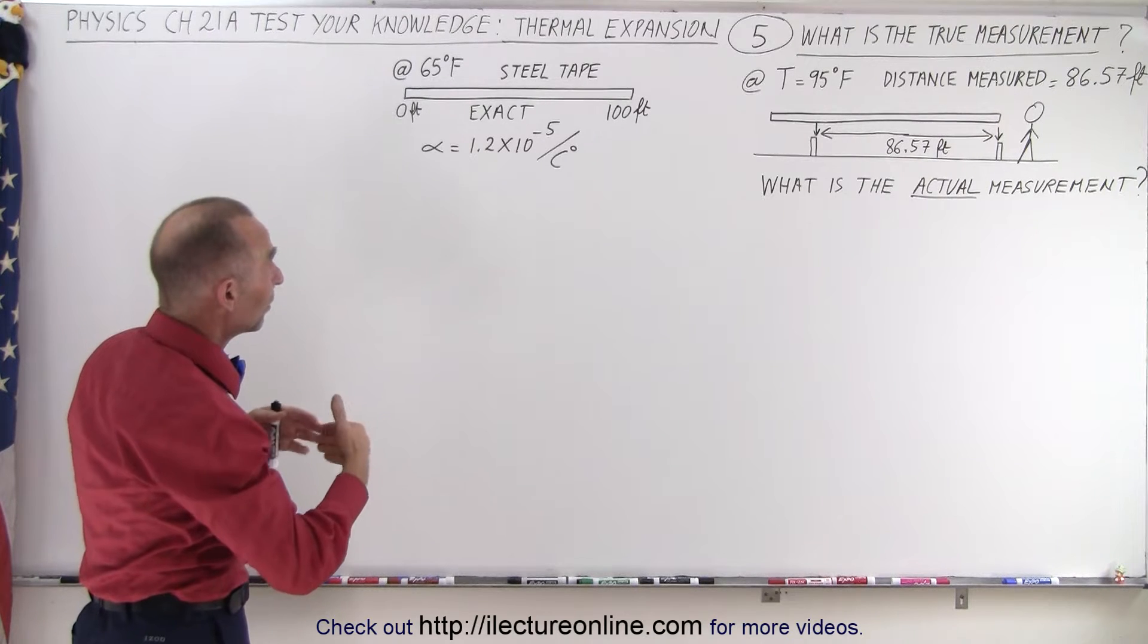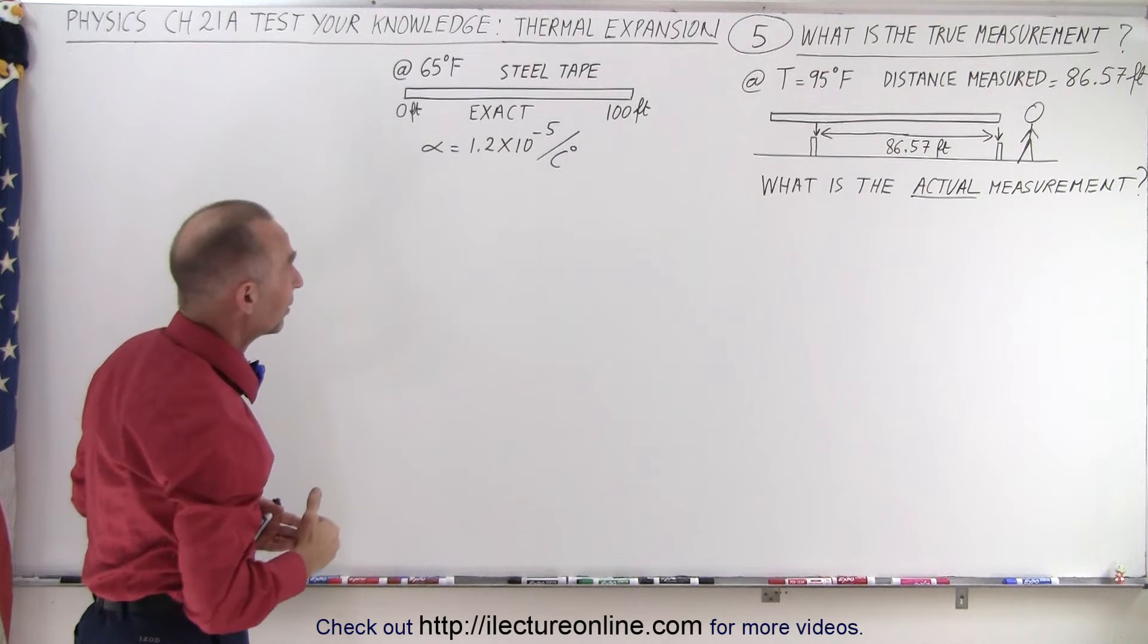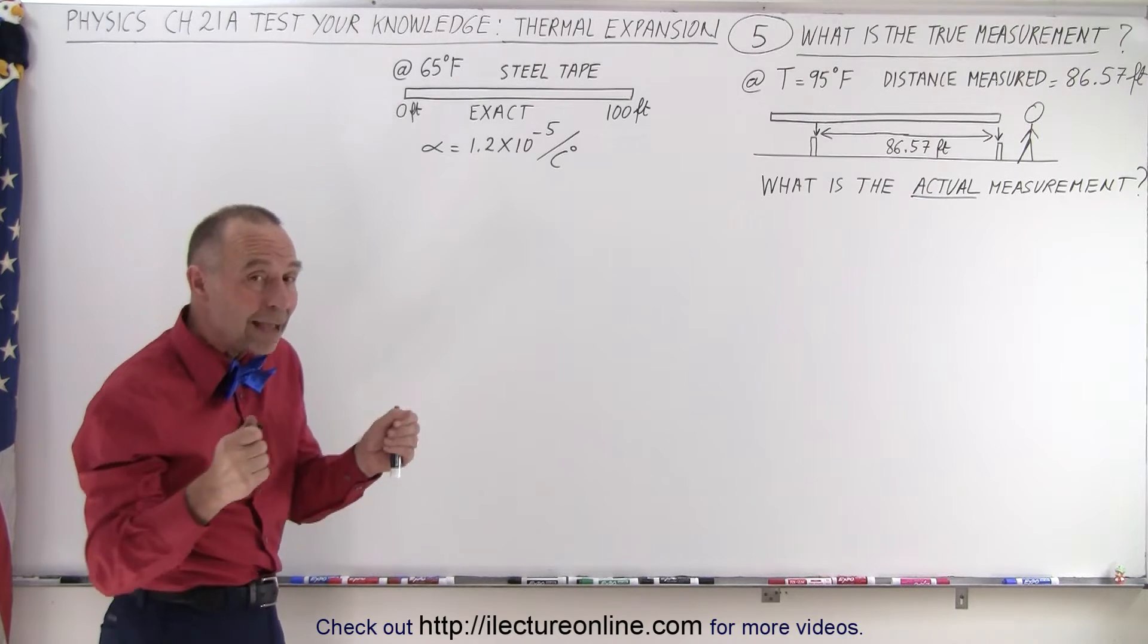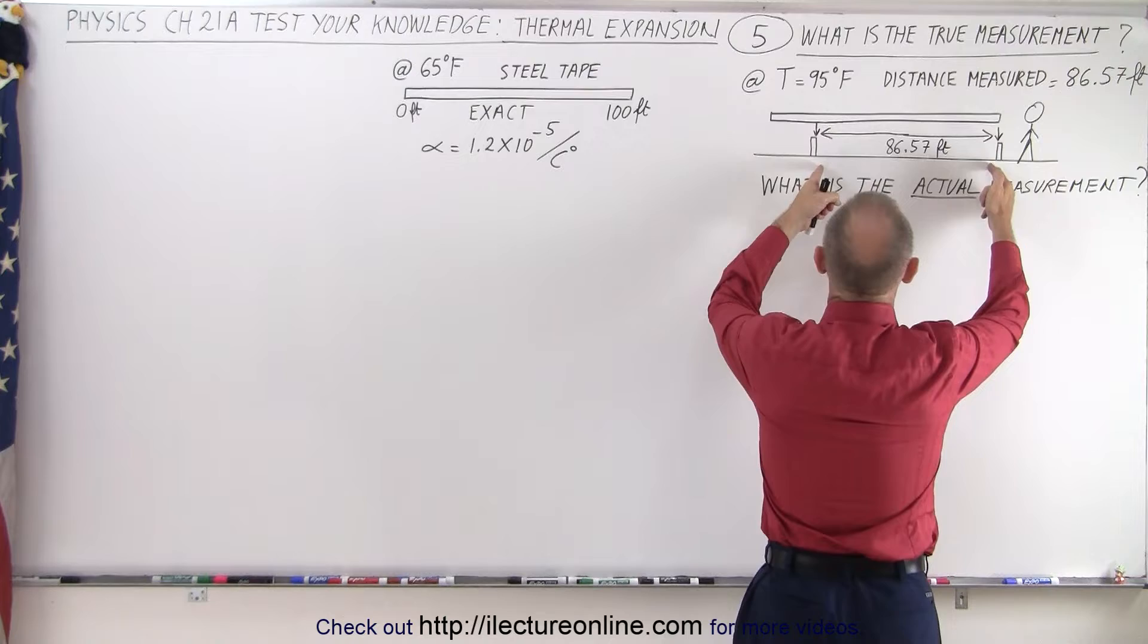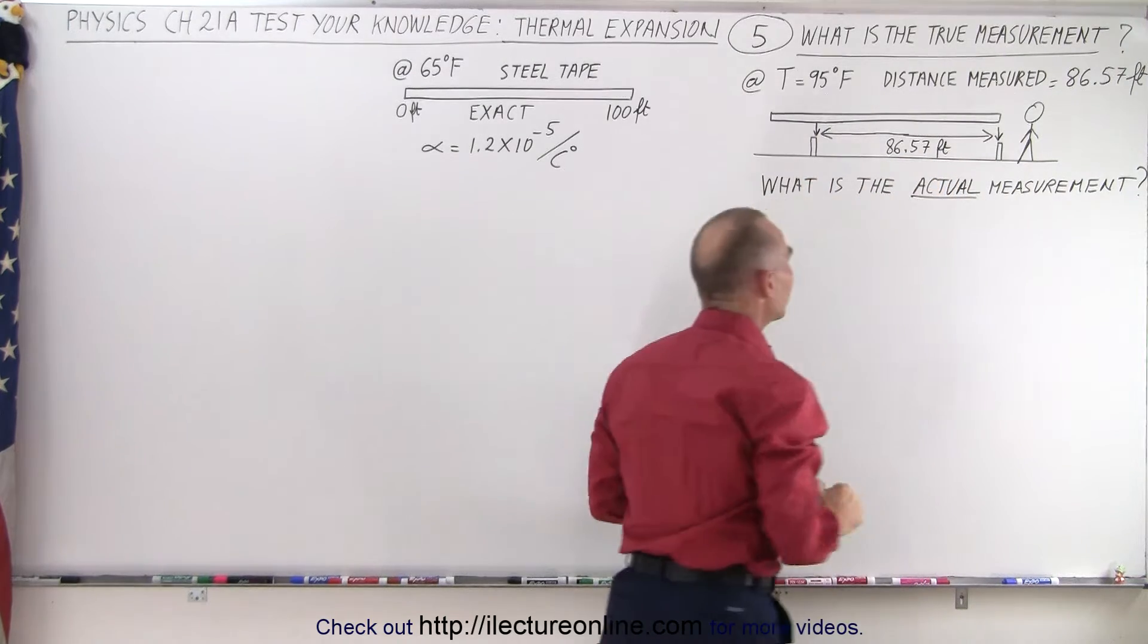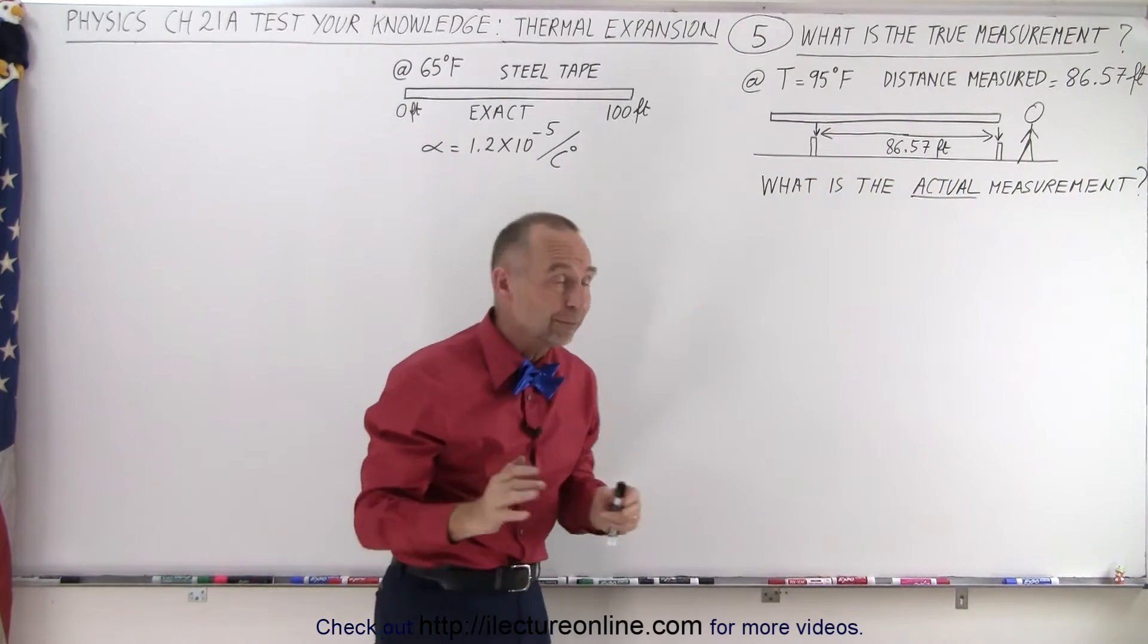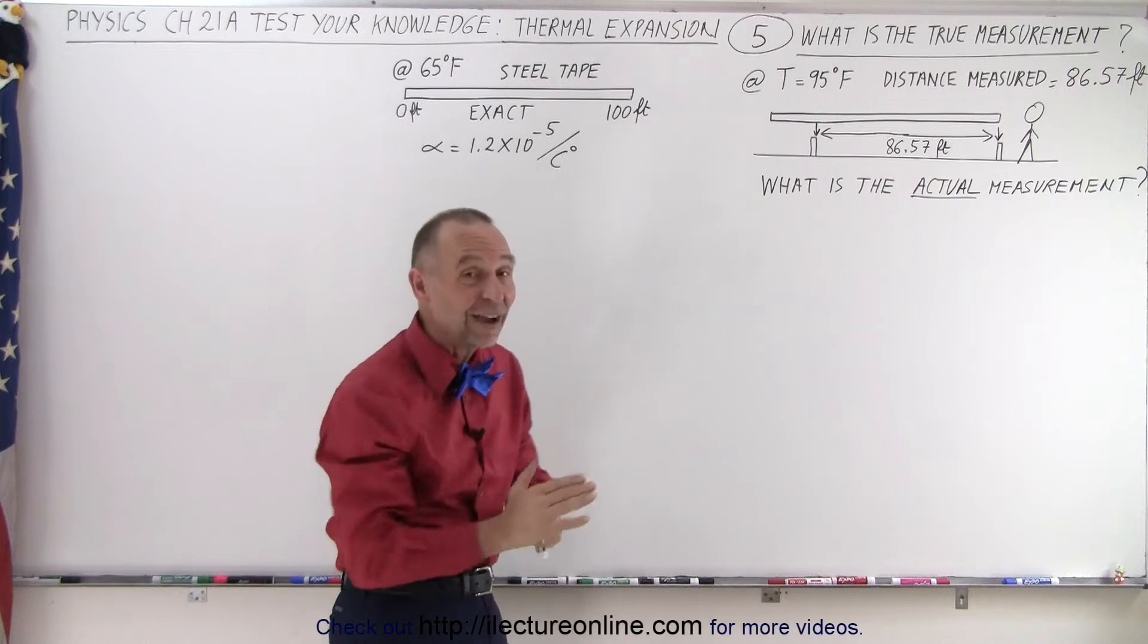Now, when the temperature goes up to 95 degrees Fahrenheit, we take the tape and make a measurement. And the measurement between two points on the ground is measured to be 86.57 feet.